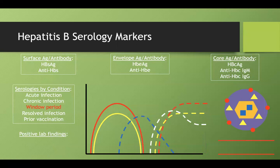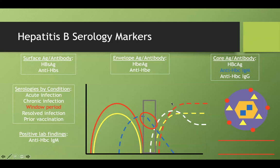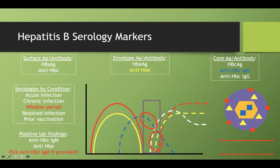In the window period, anti-HBc IgM is almost always the right answer to pick. There was one practice case where anti-HBe antibody was also positive, but if anti-HBc IgM is provided as an option, choose it.